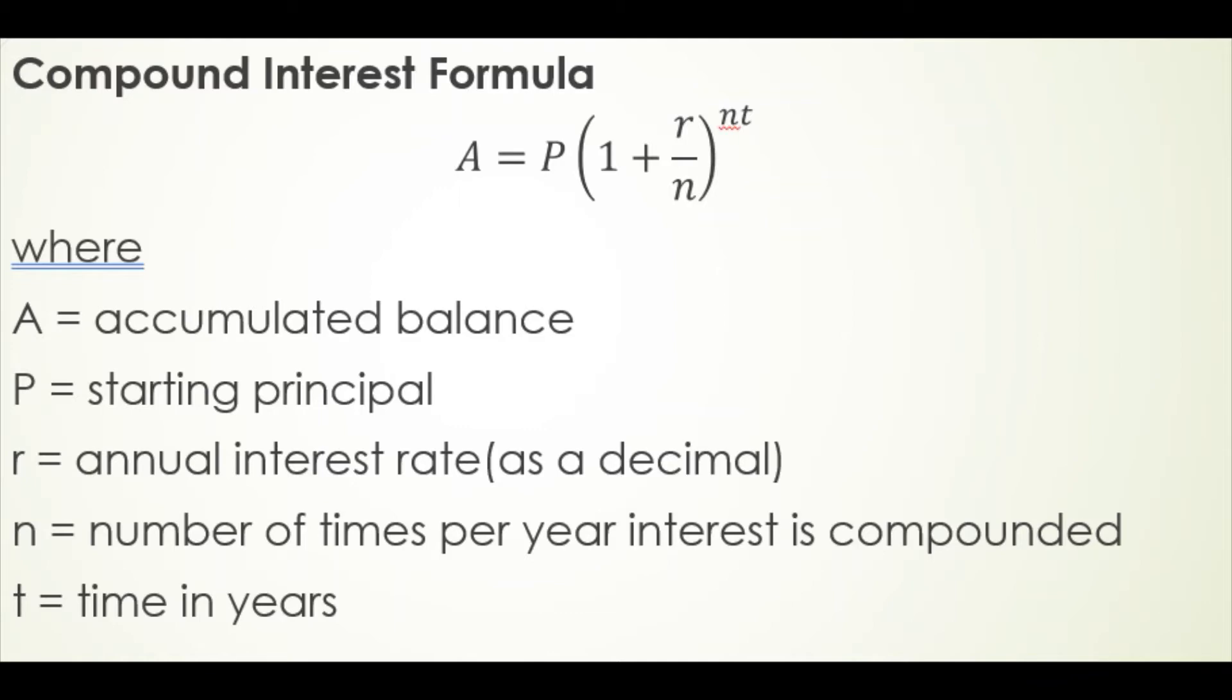N is the number of times per year interest is compounded. So, for example, if interest is compounded annually, N will be 1. If it's compounded monthly, N would be 12. If it was compounded daily, N would be 365. And notice that that N shows up in two different places in our formula.